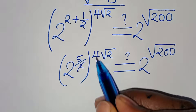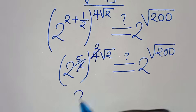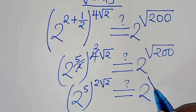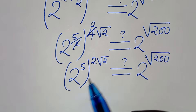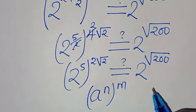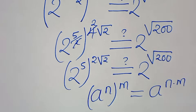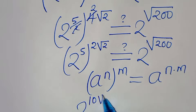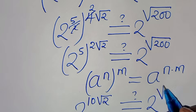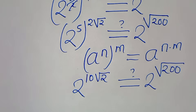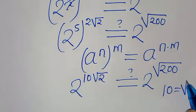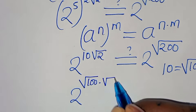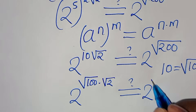Simplifying: 4 divided by 2 is 2, so we have 2 to the power of 5, raised to the power of 2 square root of 2. Applying the rule (a^n)^m = a^(n times m), we get 2 to the power of 5 times 2 square root of 2, which is 2 to the power of 10 square root of 2. Expressing 10 as square root of 100, we have 2 to the power of square root of 100 times square root of 2, which should equal 2 to the power of square root of 200.